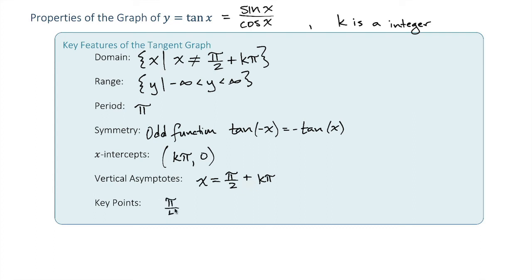then sine and cosine are equal to 1. And that actually occurs at pi over 4 plus every period, pi, so any multiple of pi, comma 1.